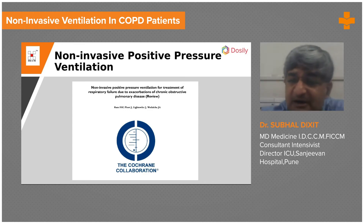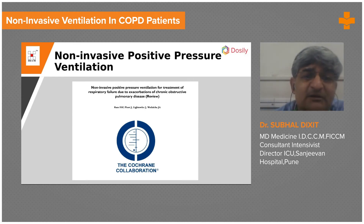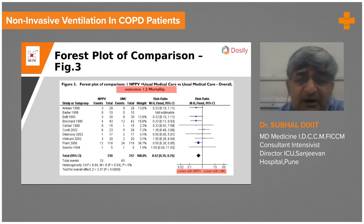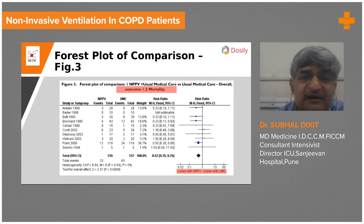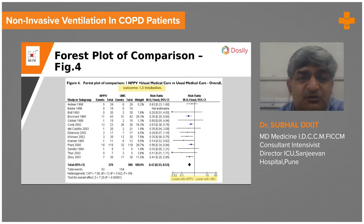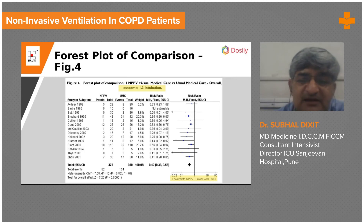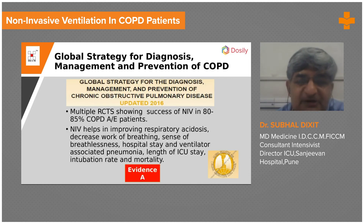A Cochrane review on non-invasive ventilation for the treatment of respiratory failure due to acute exacerbations of COPD, using forest plot comparisons, suggested that mortality was significantly lower in the group where non-invasive mechanical ventilation was used. The requirement for intubation was also less in the group where non-invasive mechanical ventilation was started, compared to the group receiving standard care.